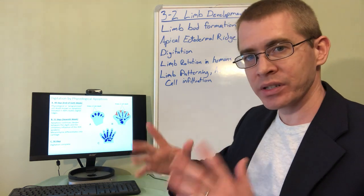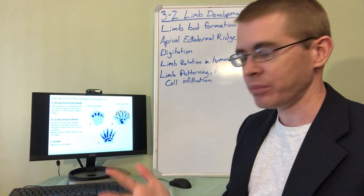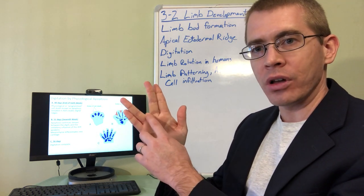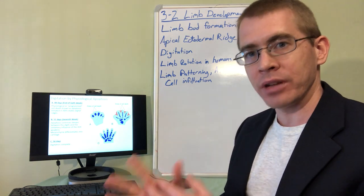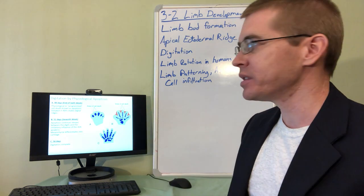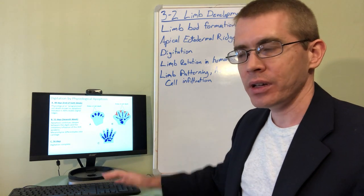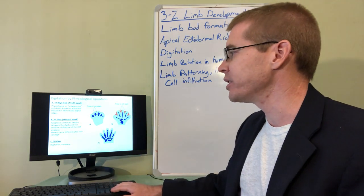By day 56 that digitation process is complete and that's why some of us have the little webbings in our fingers, some more than others, because that programmed apoptotic process was taking place.